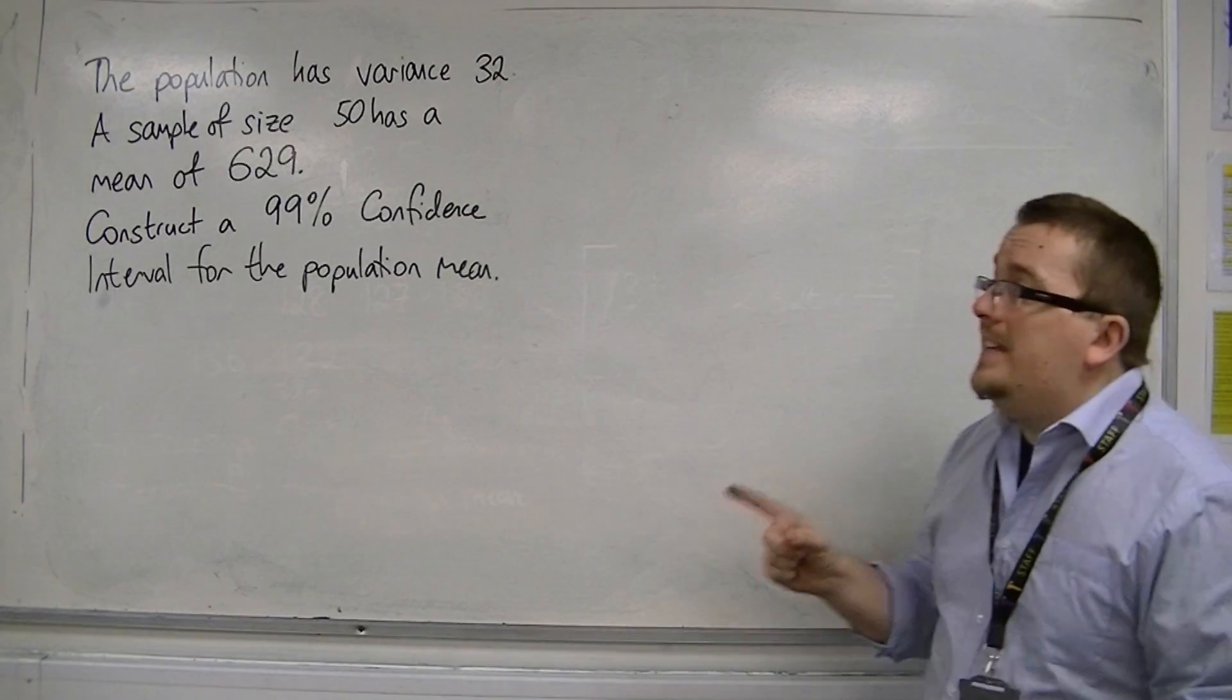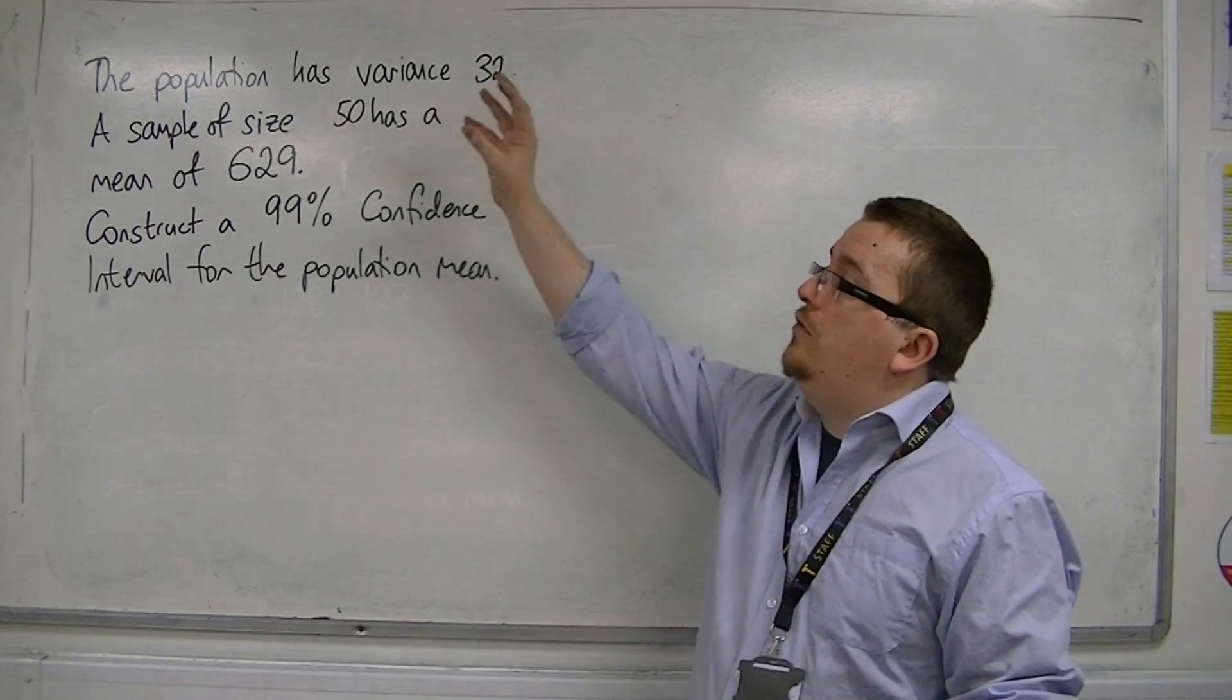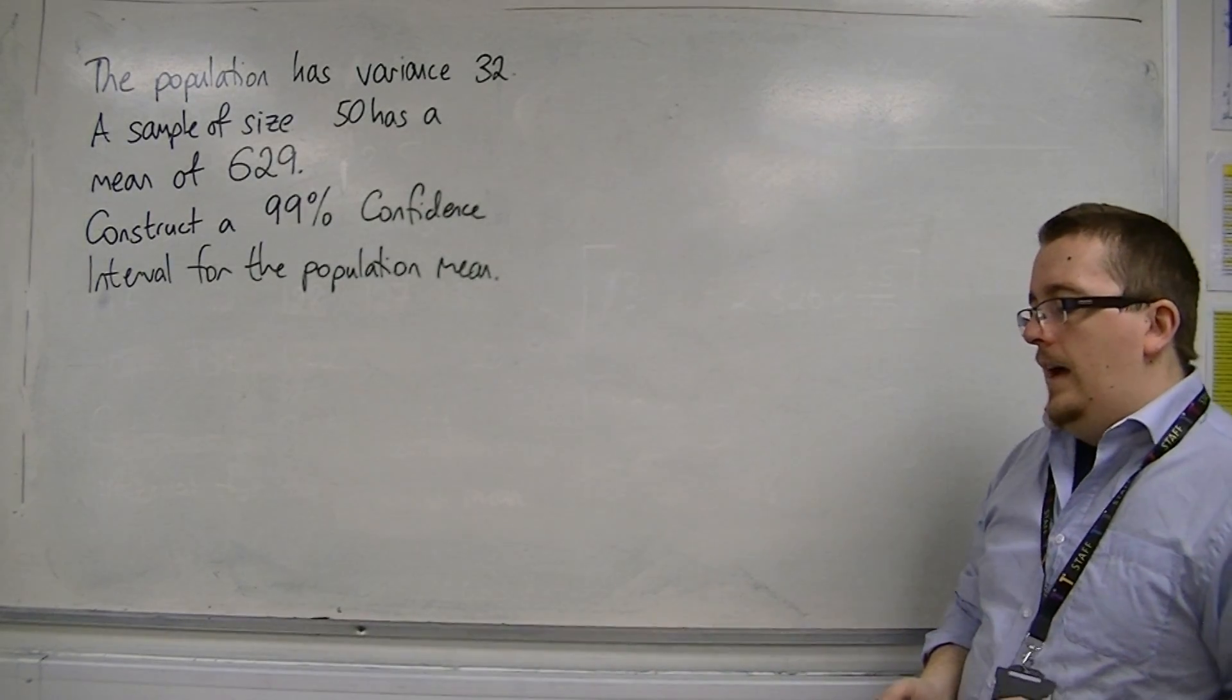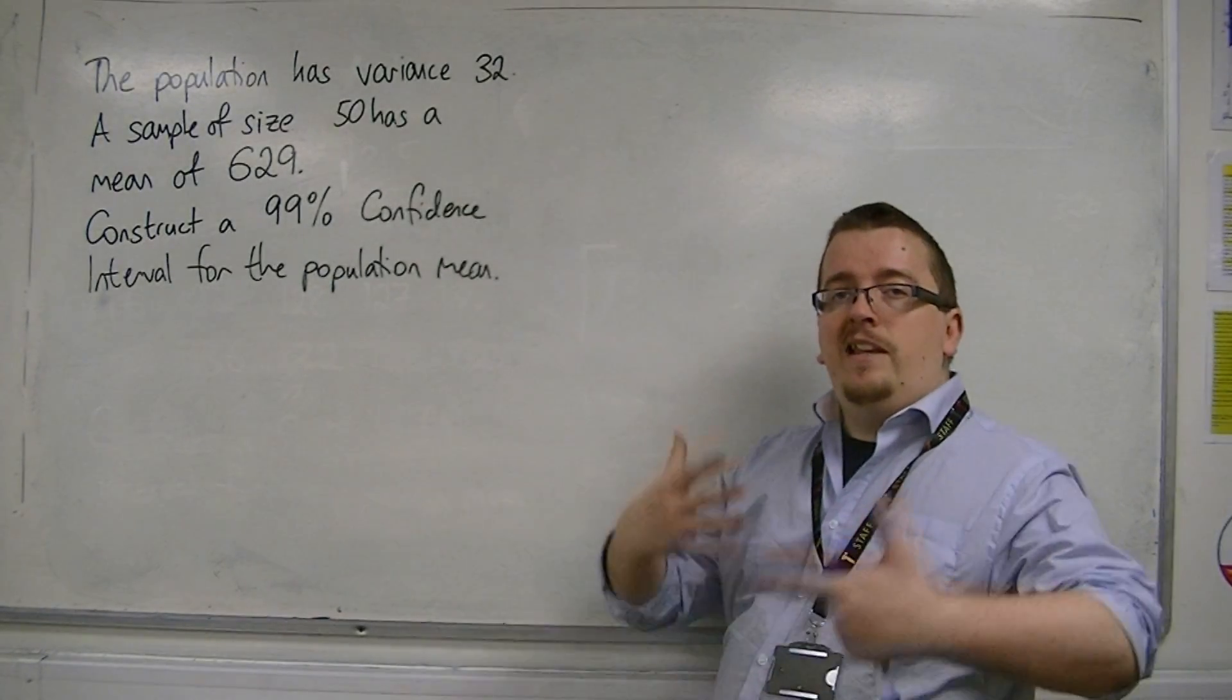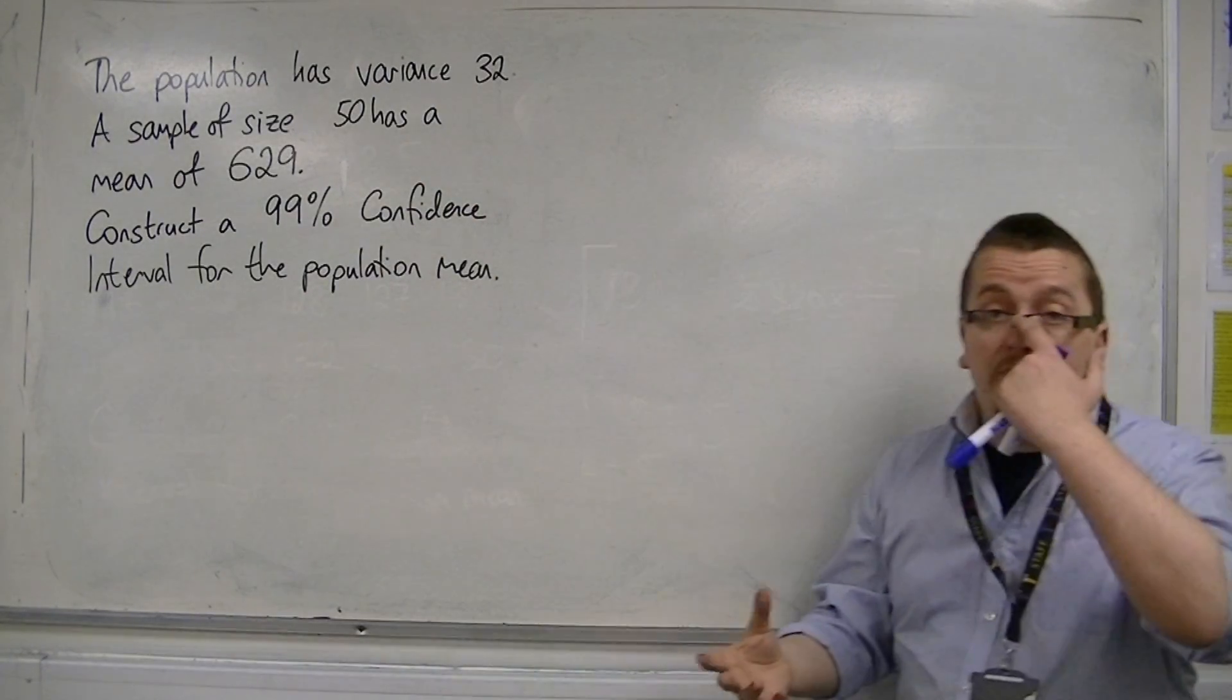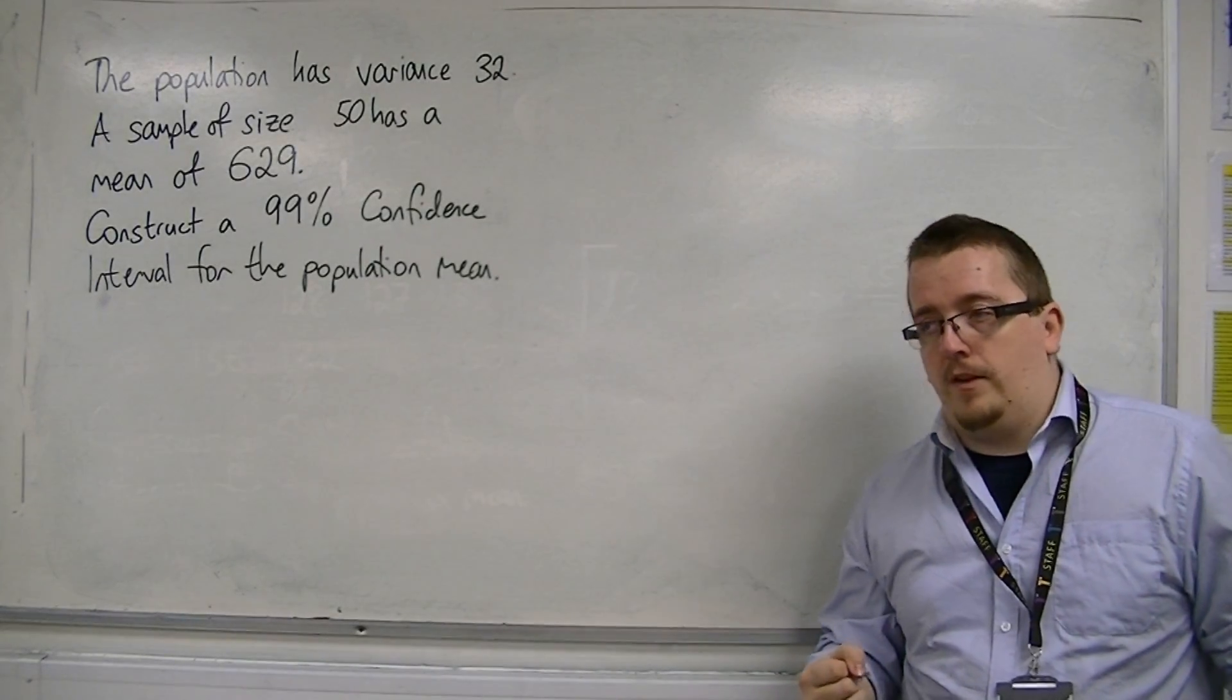Now, the key difference here from the previous example is that we don't know whether the population was normally distributed. Let's say that it's not. In which case, because we have a large enough sample size of 50, because the sample size is 30 or more, we can use the central limit theorem.